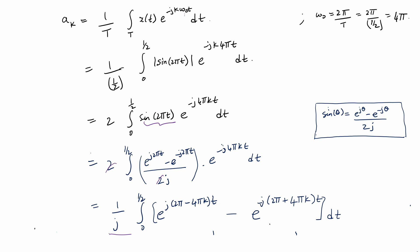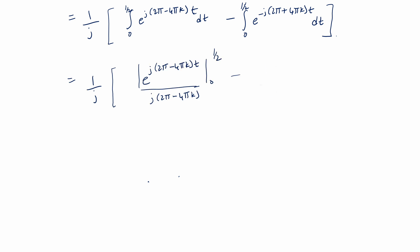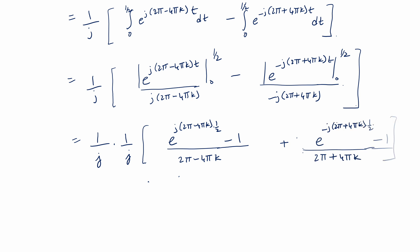The integral of an exponential e^(αt) is e^(αt)/α. Applying this to both exponential terms in our expression, and then substituting the limits 0 and 1/2, we evaluate each term at the upper and lower limits to get our intermediate result.